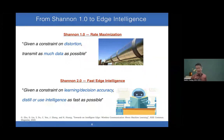Shannon 1.0 is about rate maximization—building a big pipe transporting as much data as possible. Its objective: given a constraint on distortions, transmit as much data as possible. Shannon 2.0 is different. Its goal is fast edge intelligence: given a constraint on learning accuracy, diffuse and use intelligence as fast as possible. This requires revolutionizing wireless communications design.